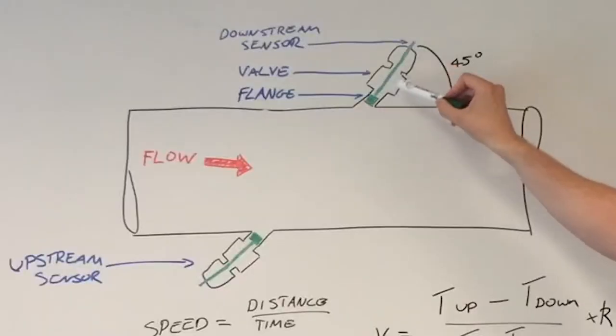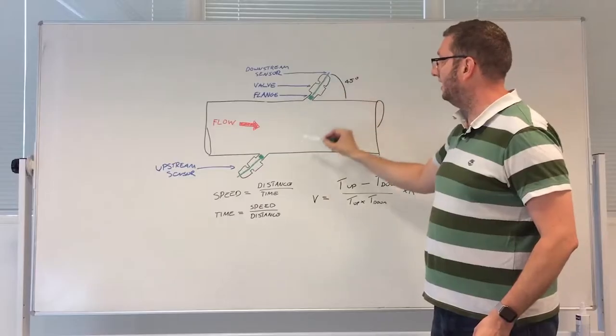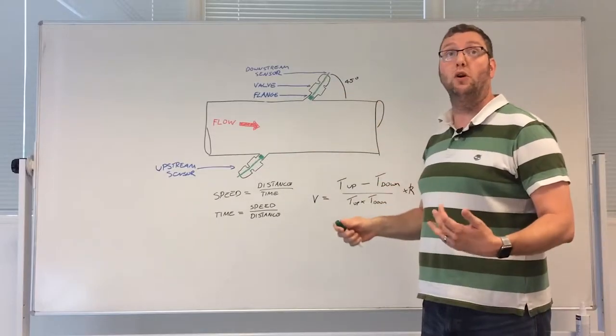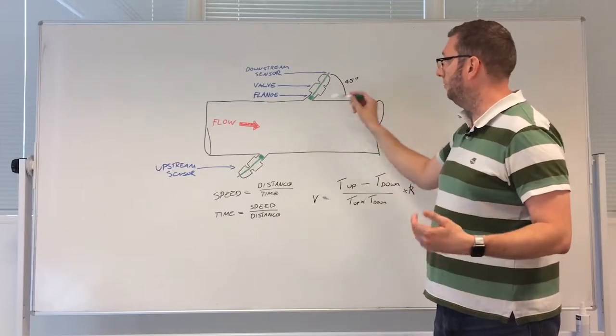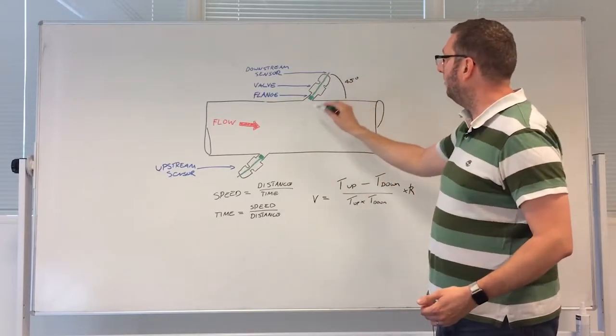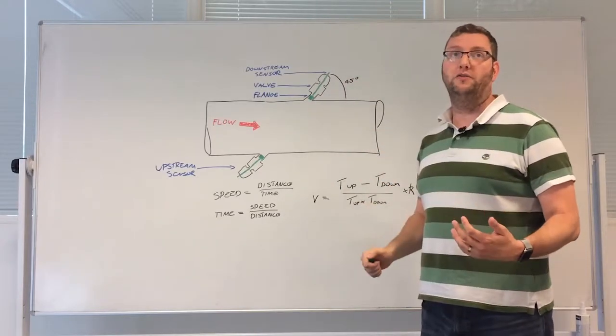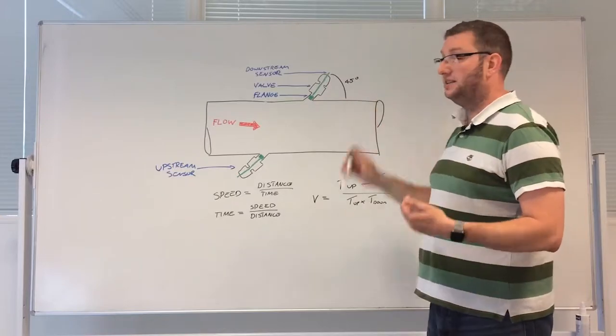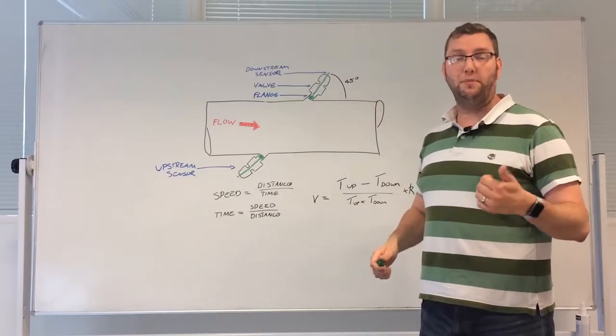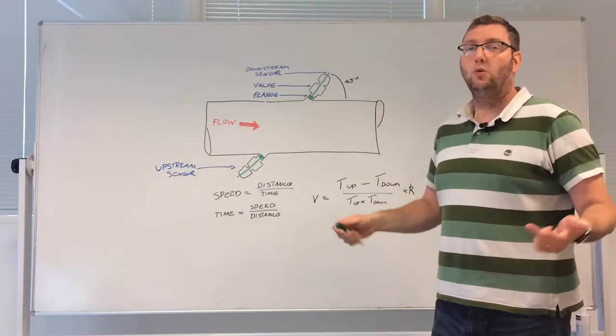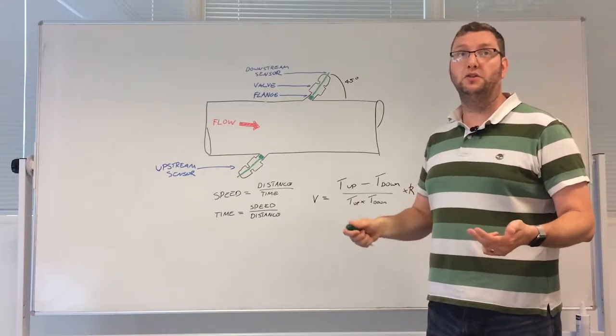So we have a small flange, a ball valve, and then our sensors insert flush to the wall of the pipes on both sides and they're arranged at about 45 degrees to the direction of flow. Now these can be inserted in different methods: hot tapping, cold tapping, spool piece. We'll look at all of those in future videos.